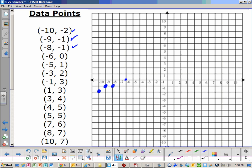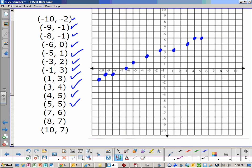Negative 6, 0. Then negative 5, positive 1. Negative 3, positive 2. Negative 1, positive 3. 1, positive 3. I'm starting to see a pattern. All righty. 4, 5. And then 7, 6. 8, 7. And 10, 7. Okay, we are there.